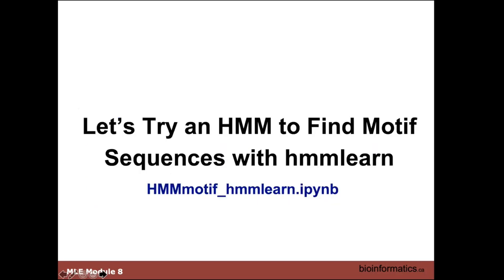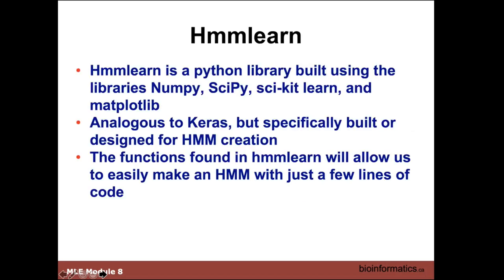The next part we wanted to look at after the secondary structure prediction is essentially what we did this morning — the hidden Markov motif analysis. In this case, we're not using Scikit-Learn; we're using HMM-Learn. It is a Python library, similar to Keras but specifically done for hidden Markov models. Just like how Keras makes it really easy to build neural nets, HMM-Learn does the same for hidden Markov models.